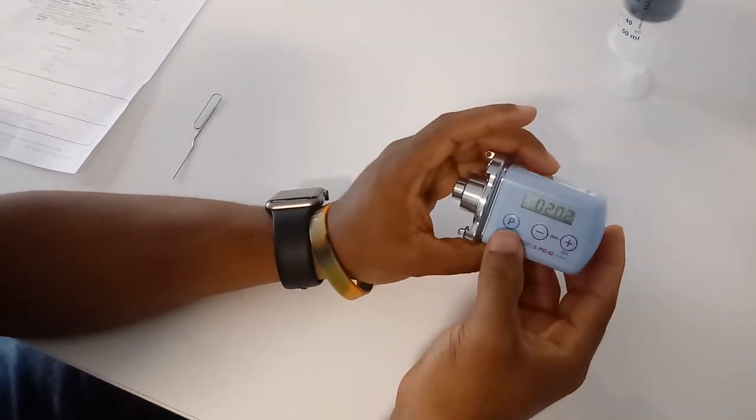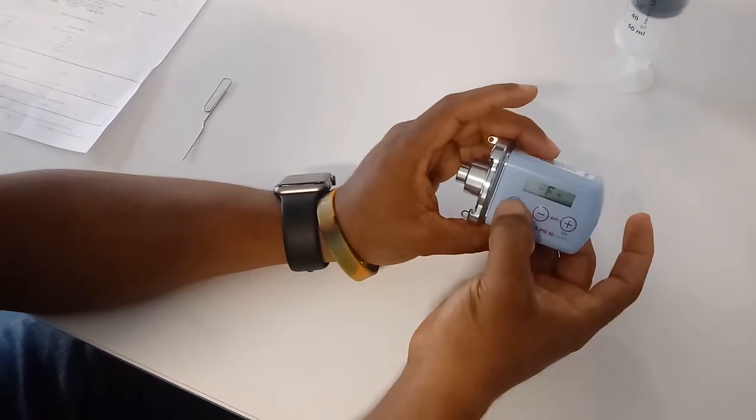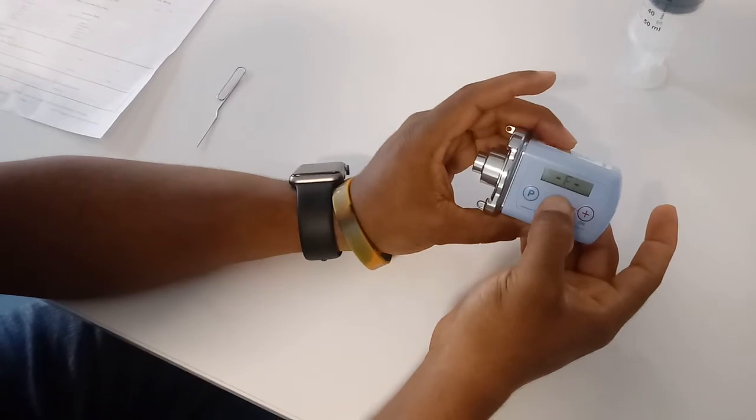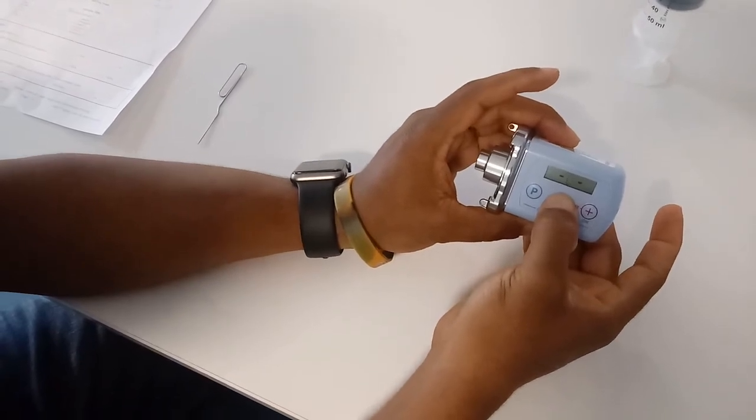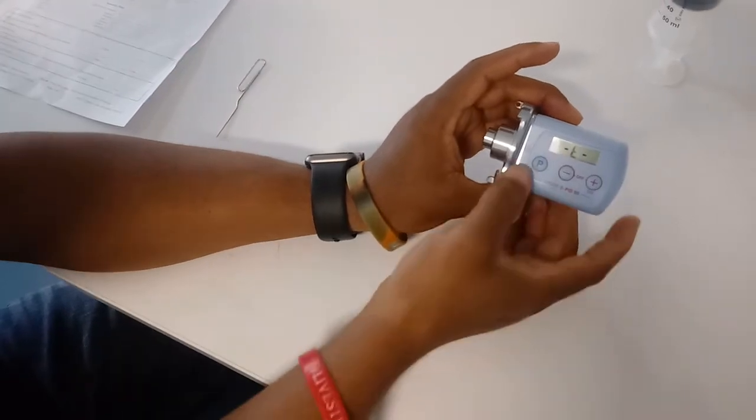Okay, so right now we're going to be switching the pump from F mode to time mode. Press the P button until you hear a little peep sound. Once it's blinking, hit the minus sign and it will switch out to time mode. We are now in time mode.